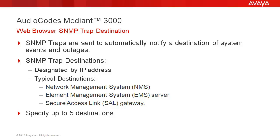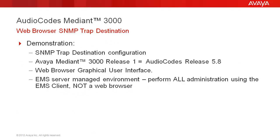Up to 5 destinations may be specified. We will demonstrate the configuration of an SNMP trap destination for Mediant 3000 Release 1. The Avaya Release 1 classification for the AudioCodes Mediant 3000 corresponds to AudioCodes Release 5.8 software.